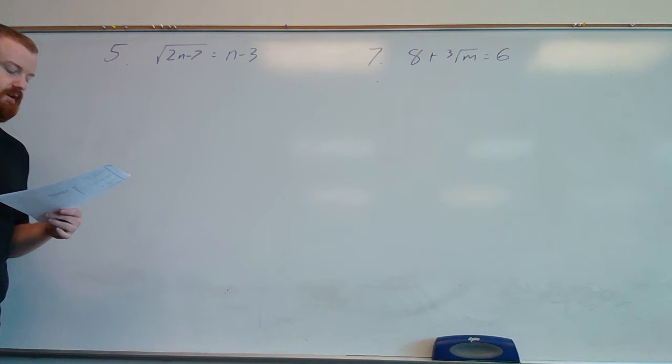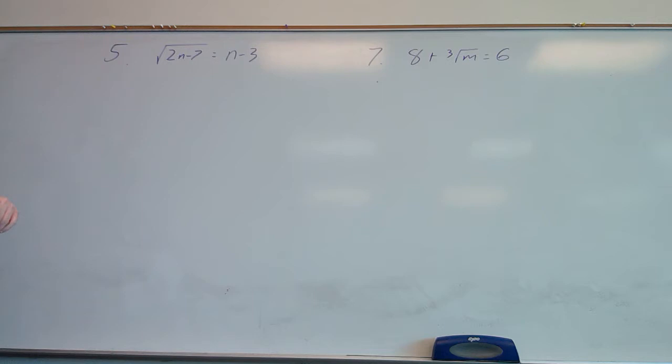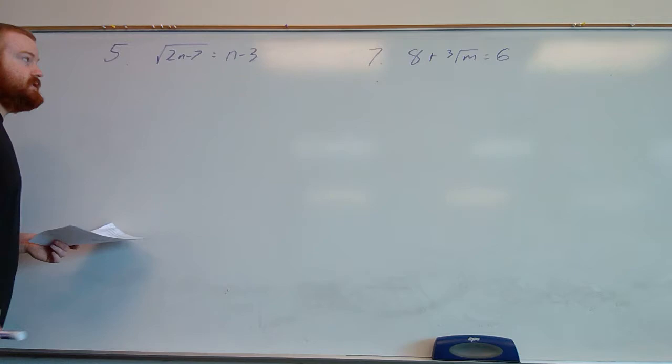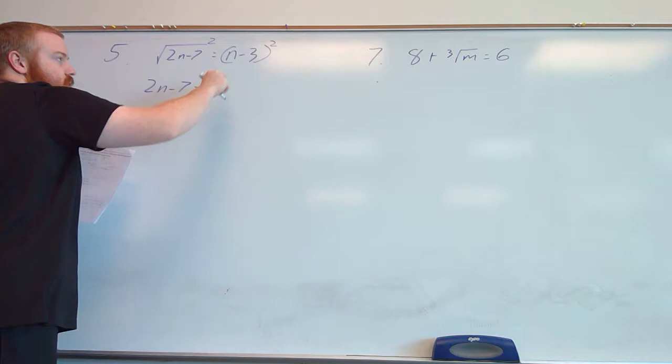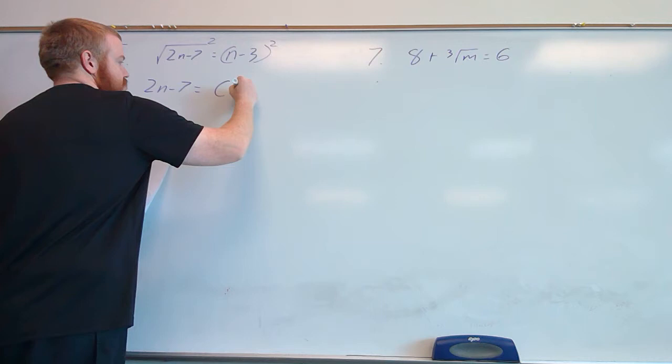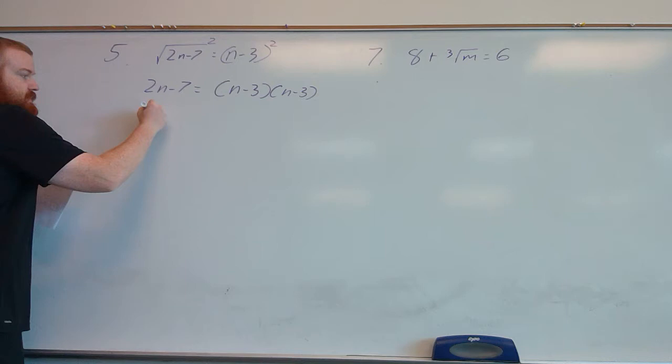In example 5, we have a square root of something equal to more than one term. Similar to before, we square both sides to eliminate the square root. The square cancels the square root, leaving 2n minus 7. Since we have n minus 3 being squared, we rewrite it as (n minus 3) times (n minus 3) and then multiply that out.